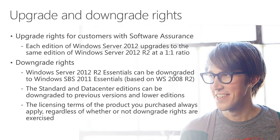Regarding upgrade and downgrade rights: upgrade rights are simple — with Software Assurance, each edition of Windows Server 2012 upgrades to the same edition of Windows Server 2012 R2 at a one-to-one ratio. For downgrade rights, if you buy the 2012 R2 Essentials edition, you can downgrade to Windows Server 2012 Essentials or even Windows SBS 2011 Essentials, which was based on Windows Server 2008 R2. Downgrade rights are primarily for application compatibility reasons.